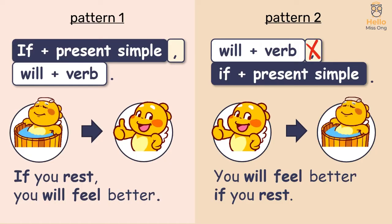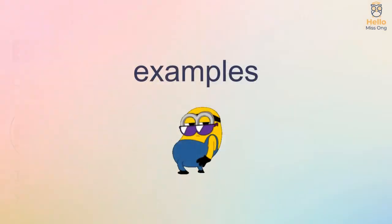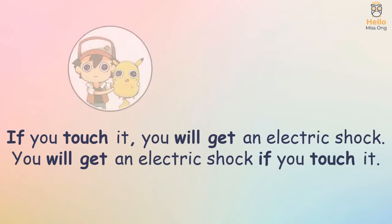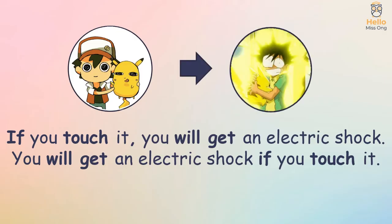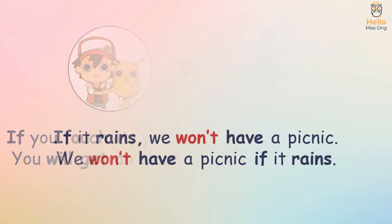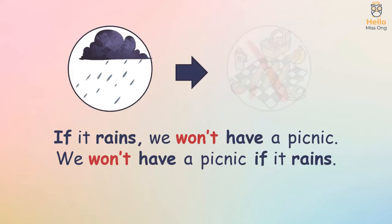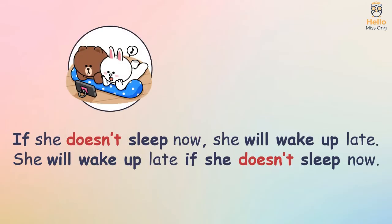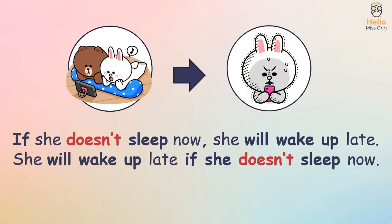The two sentences have the same meaning. Let's look at some examples of first conditional sentences. If you touch it, you will get an electric shock. You will get an electric shock if you touch it. If it rains, we won't have a picnic. We won't have a picnic if it rains. If she doesn't sleep now, she will wake up late. She will wake up late if she doesn't sleep now.